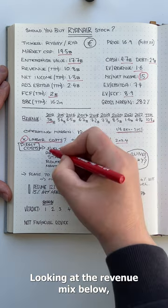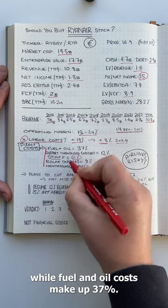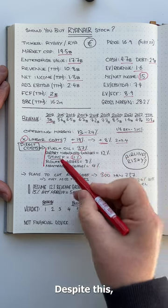Looking at the revenue mix below, you can see that staff costs make up at least 11% of revenue, while fuel and oil costs make up 37%. Despite this, Ryanair has big plans for the future.